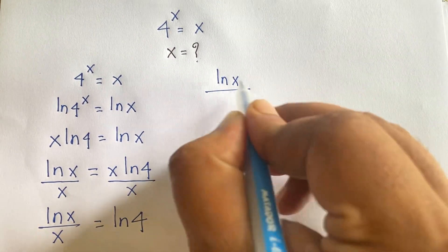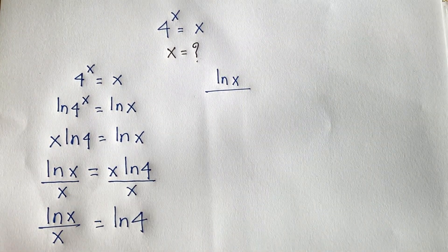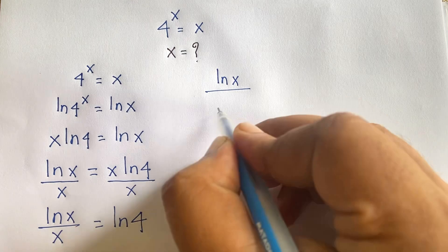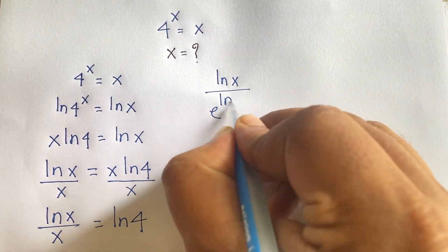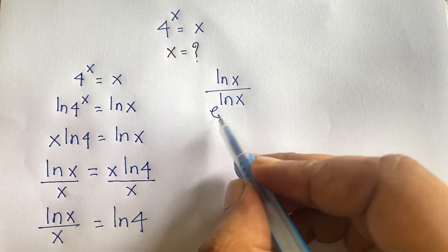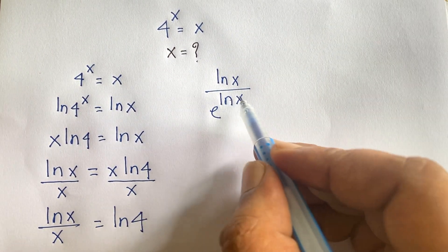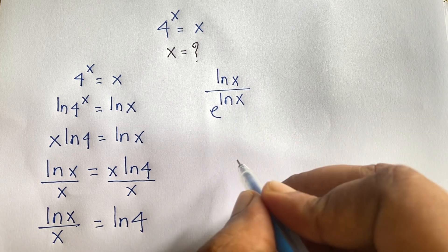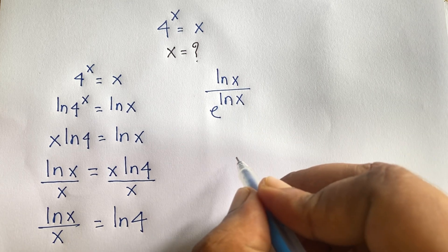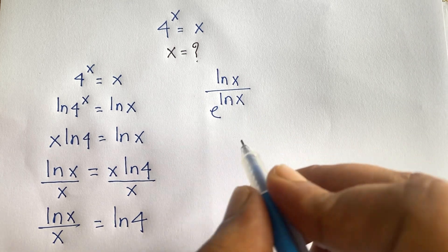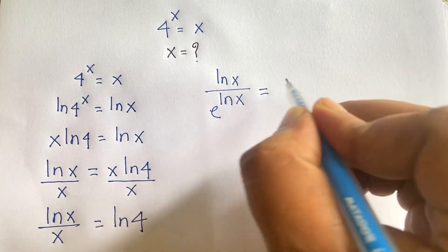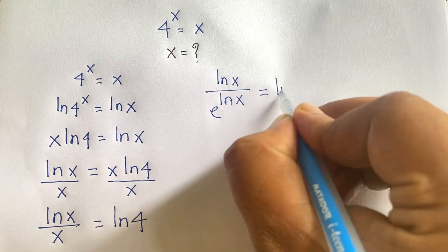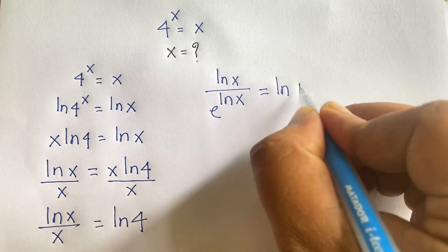Now at this moment I can say here is ln x, and this x — it will be e to the power ln x. We know that e to the power ln a equals a. So this equals ln 4.